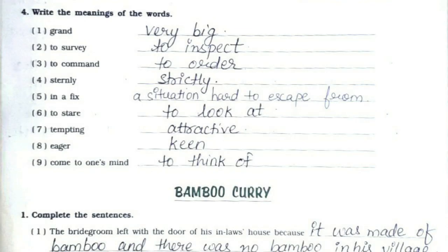Now question number four: write the meanings of the words. First one: very big. Second: to inspect. Third: to order. Fourth: strictly. Fifth: a situation hard to escape from. Sixth: to look at. Seventh: attractive. Eighth: keen. And ninth one: to think of.